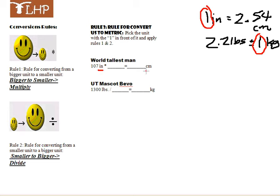We're going to go from inches to centimeters. By the way, 107 inches is approximately the height of the world's tallest guy ever. We'll talk more about that in class. He was almost 9 feet.